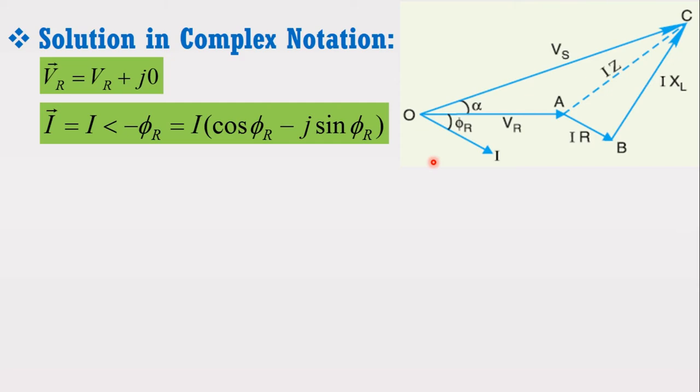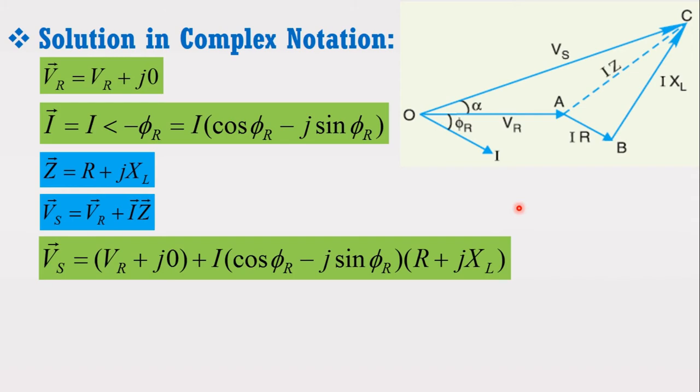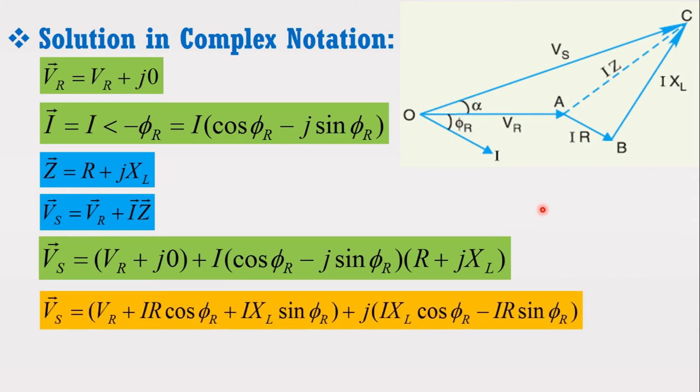From the figure, it can be observed that z equals r plus j xl and Vs equals Vr plus Iz. Putting the values of Vr, I and Z, we get the following expression. Simplifying it, we get the following expression.